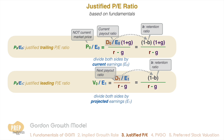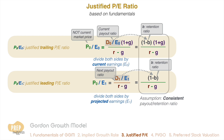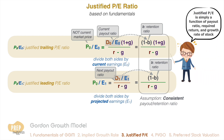Similarly, we change V0 to P0 to make the notation consistent with PE. So in essence, the justified PE ratio of a stock is rather simple using the Gordon growth model. You do not even need the earnings or dividend of the company. As long as the company has a consistent payout or retention ratio, the justified PE ratio is simply a function of the payout ratio, required return, and growth rate of the stock.